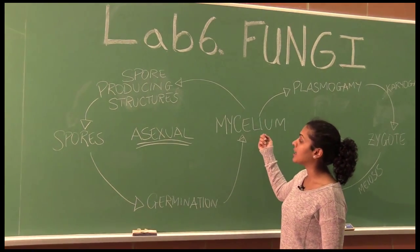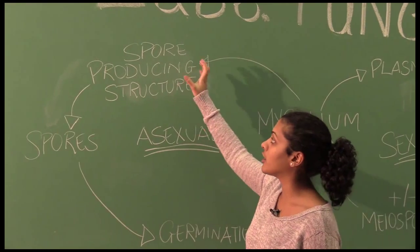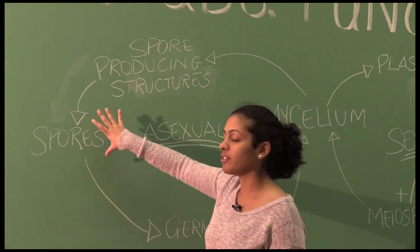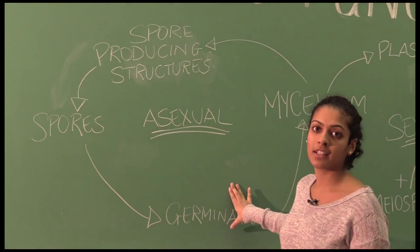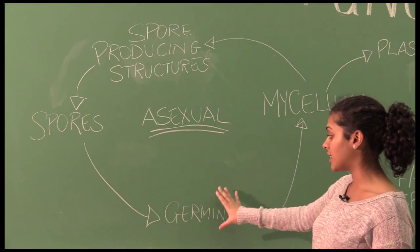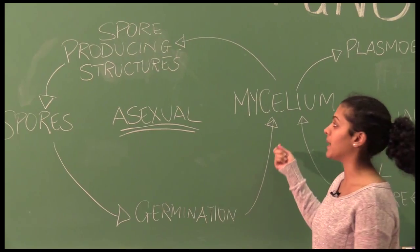Mycelium, under the right conditions, will produce sporangia, which are your spore producing structures. And those structures will give rise to spores. The spores germinate, usually under wet conditions. So the fall, spring, your fridge are great conditions for germination of fungi. And they just produce more mycelium.